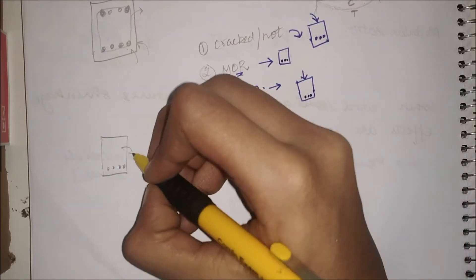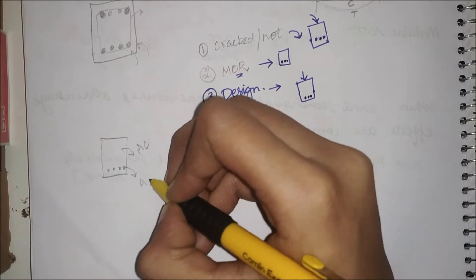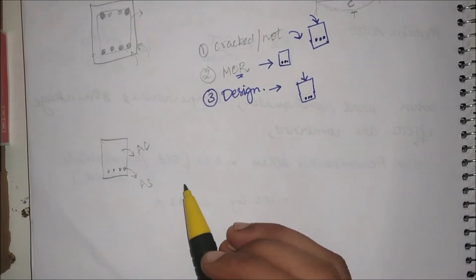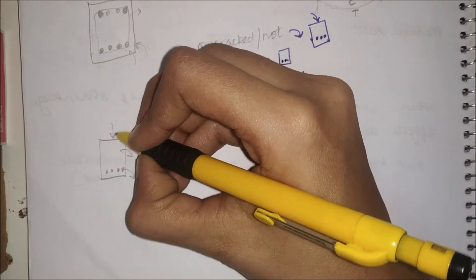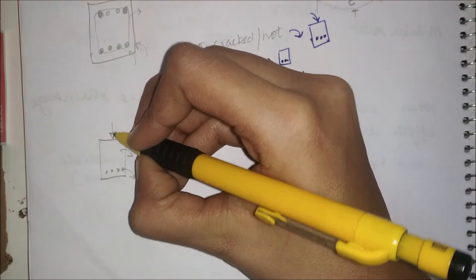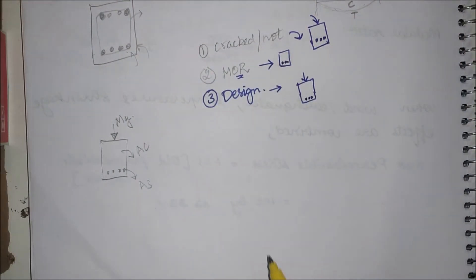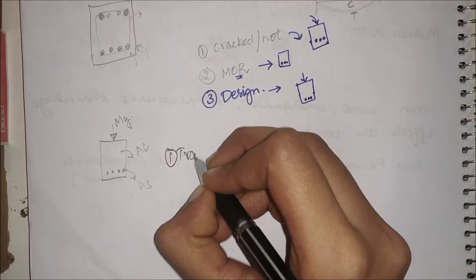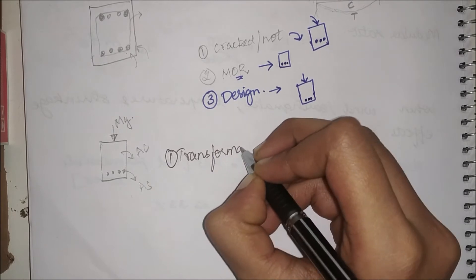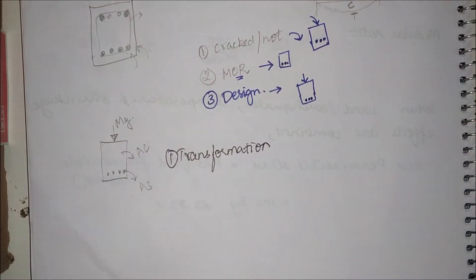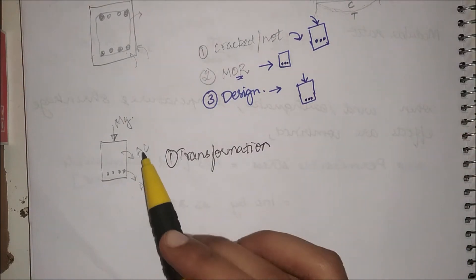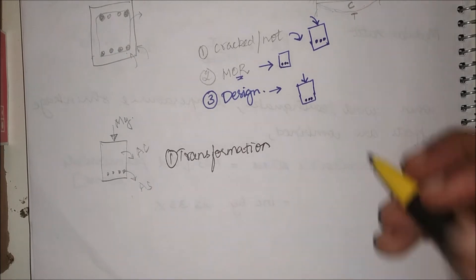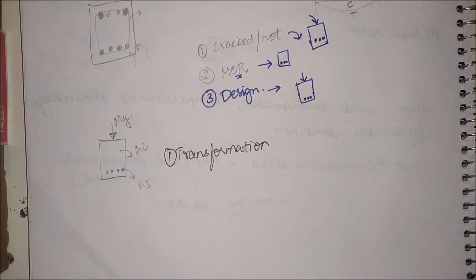Starting with whether the section is cracked or not: I have my concrete area and my area of steel. I have a moment being applied, and for that given moment I have to find whether the section is cracked or not. The first step is transformation — I'm going to transform this section.